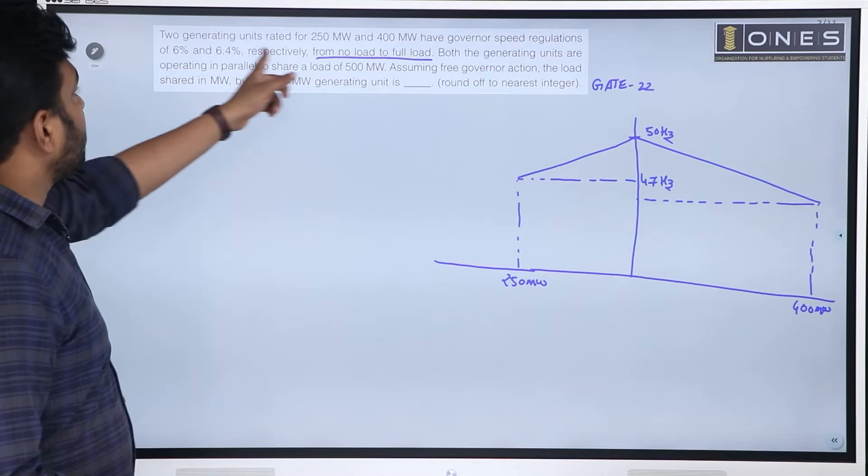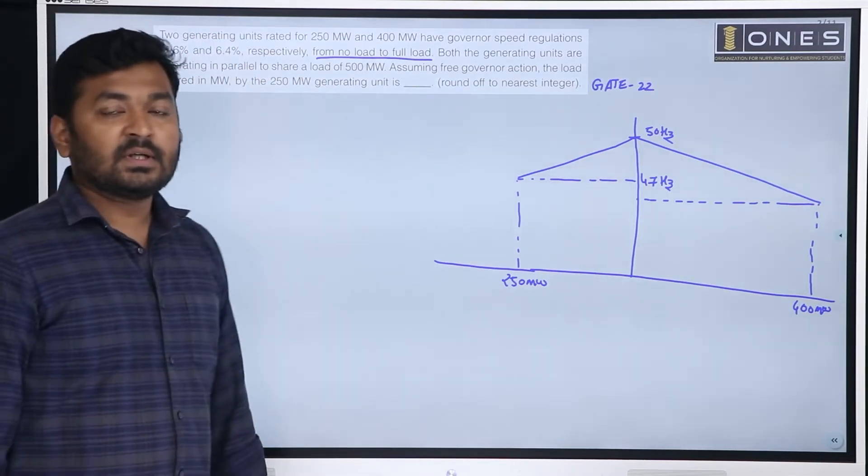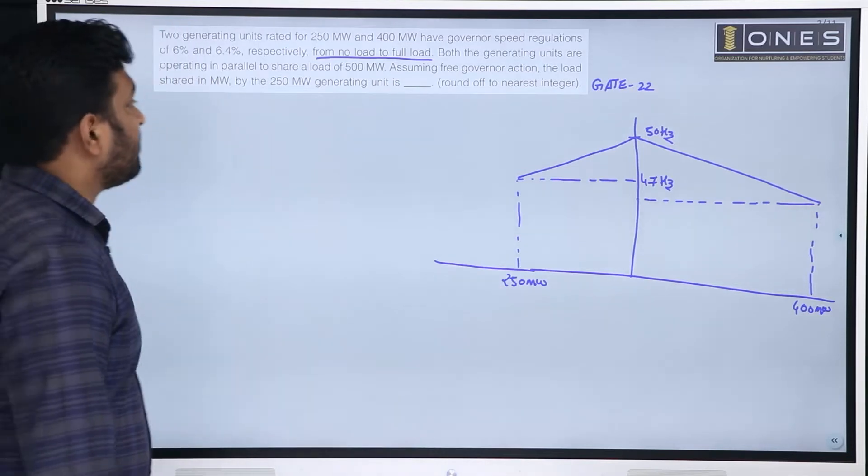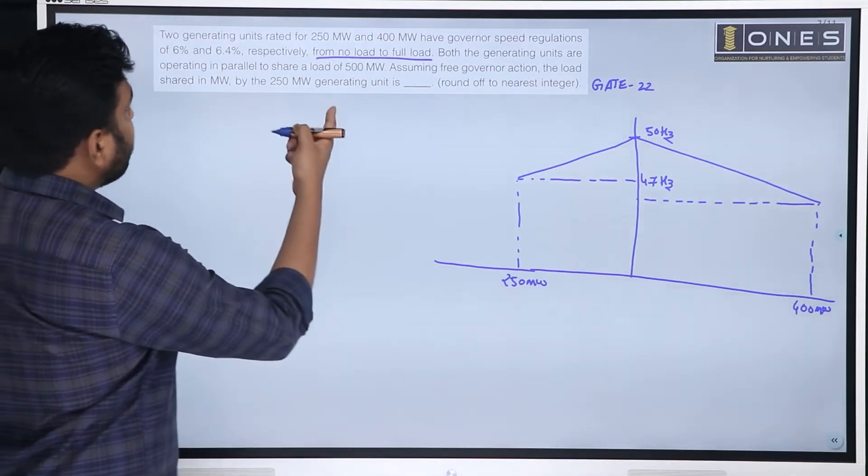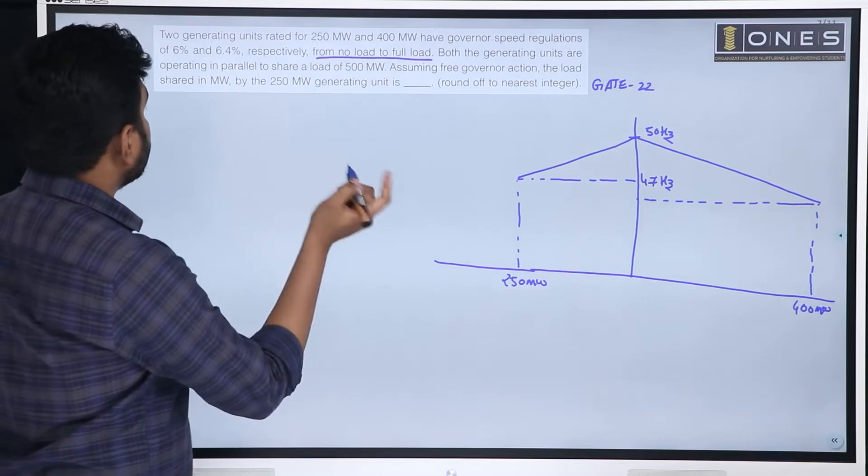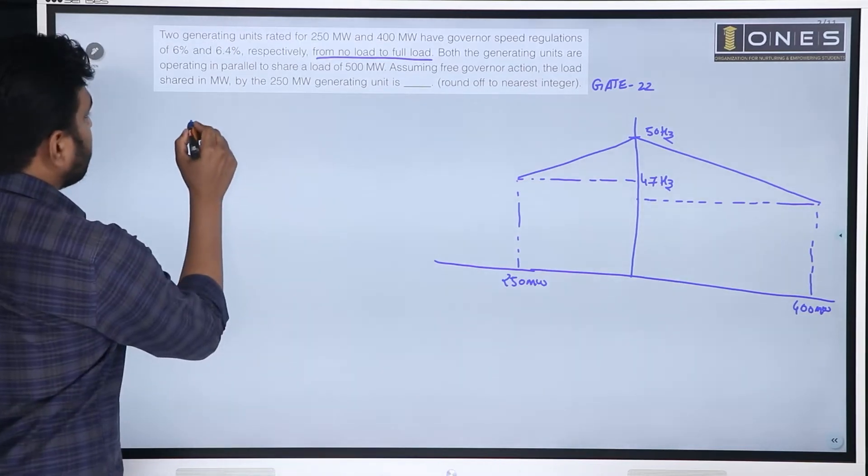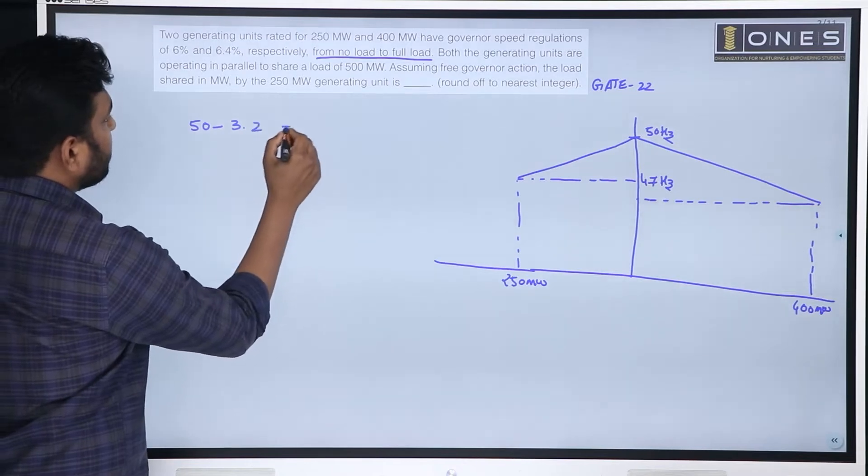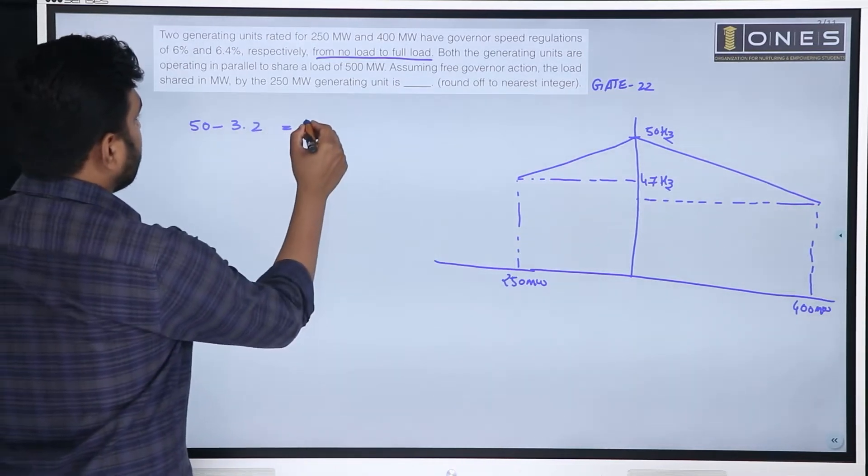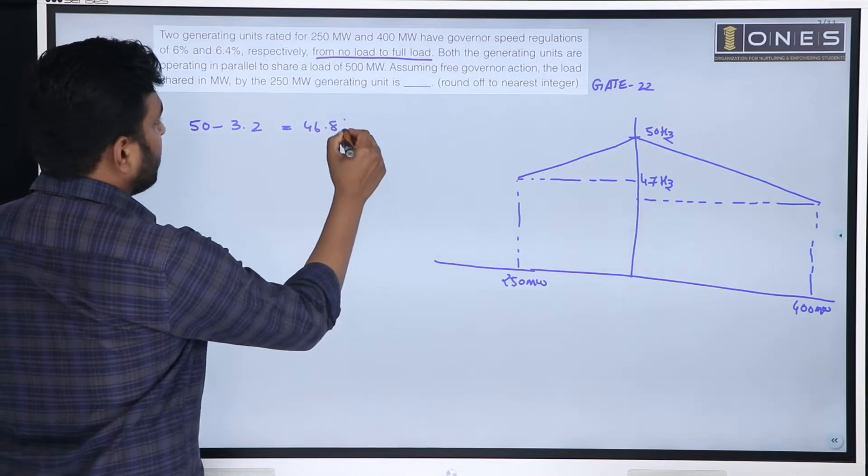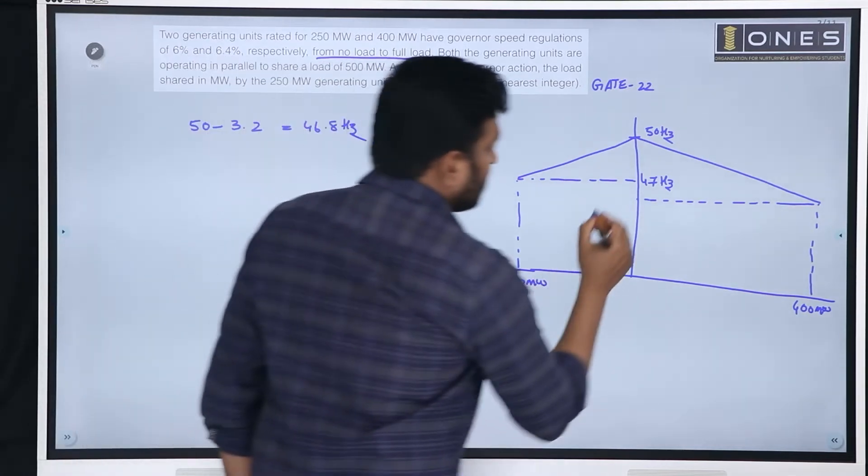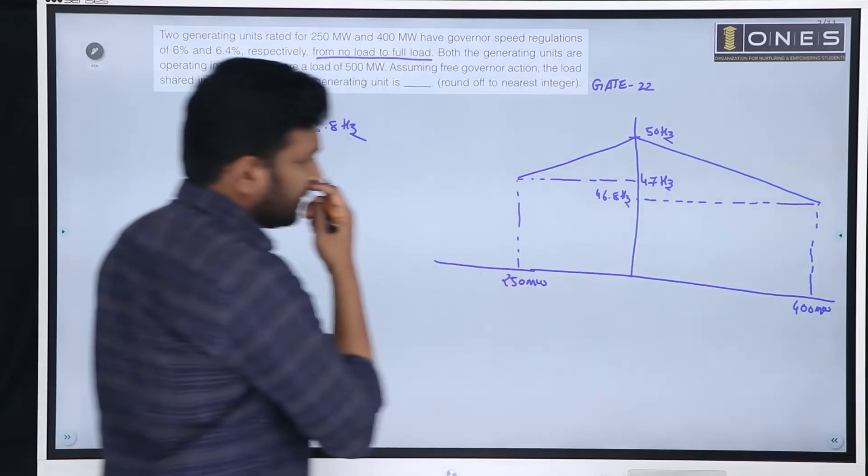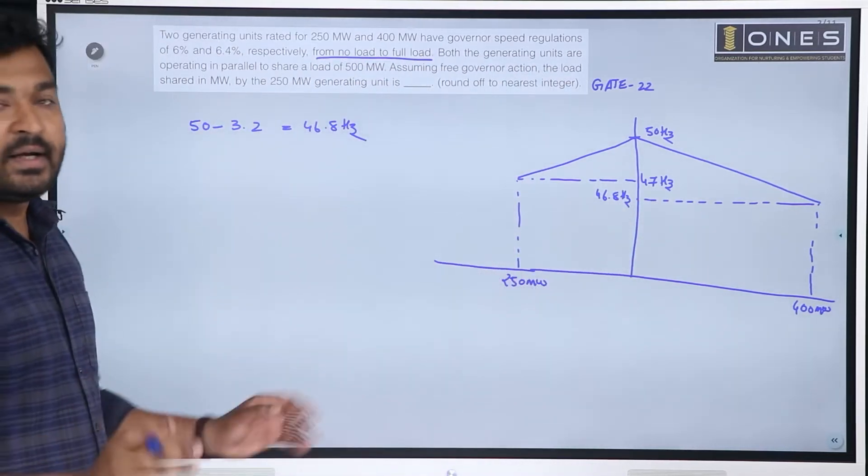400 megawatt, it is 6.4 percent. 6.4 percent at full load frequency, full load frequency will be 50 minus 3.2. It will come as 46.8 hertz. So, this is given data.